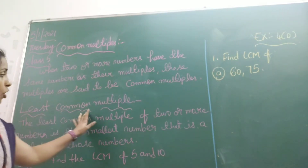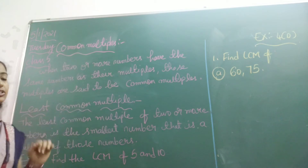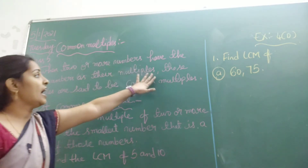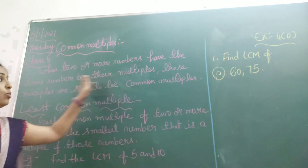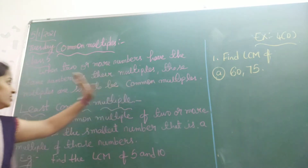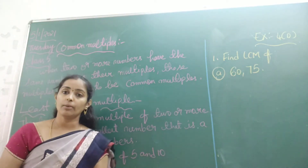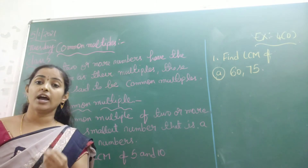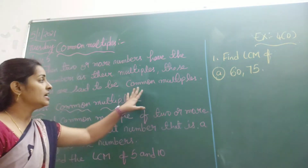So before knowing about the least common multiple, first let us know what we mean by a common multiple. Common multiples are those when two or more numbers have the same numbers as their multiples. Those multiples are said to be common multiples. If you are taking any two or more numbers and they share a common multiple, those are said to be common multiples.